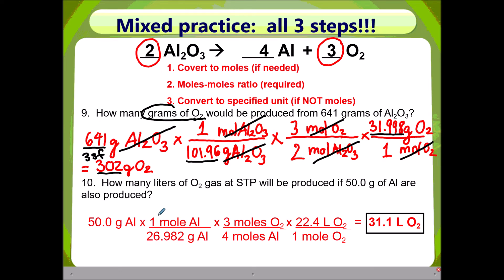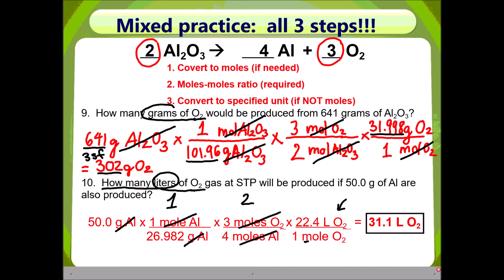Welcome back. In this problem you are given 50.0 grams of aluminum. This is Step 1 — you're starting with grams and need to get to moles of aluminum to even start the problem. Once Step 1 is done, you get to Step 2, which is the moles-to-moles ratio — getting rid of moles of aluminum and going to moles of oxygen. For this problem you need Step 3 because they asked for how many liters of oxygen gas. The specified unit is liters of oxygen, which goes on top, so you need to get rid of moles of oxygen by placing them on the bottom. Also in Step 1, 26.982 grams is the molar mass of aluminum. Your final answer turns out to be 31.1 liters of oxygen.